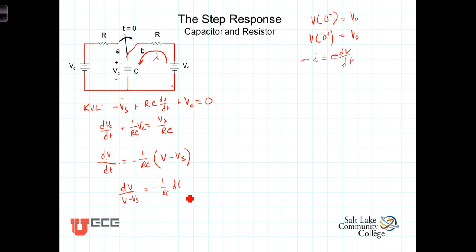It would do well for you to stop the video at this point and go back to the previous video where we did the natural response, and just notice the difference between the two equations. The only difference is this constant: it's not just V in the denominator, it's V minus V sub S. The right-hand side is the same: negative one over RC times dt.